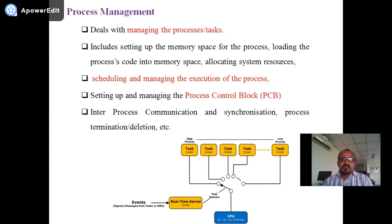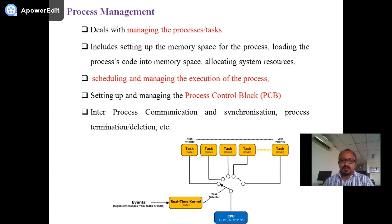Process management deals with managing the process or task. If you are designing embedded software for a mobile, there are four or five different tasks or programs — called tasks or threads. These include display, keypad-related program, sensor-related program, and memory management program. Process management includes setting up the memory space for processes, loading the process code into memory, and allocating system resources.